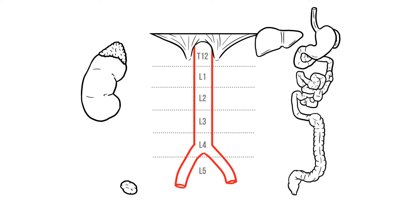These branches can be split into three main groups. First we have the parietal vessels. These are small paired arteries that come off at every vertebral level to supply the body wall and diaphragm.